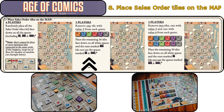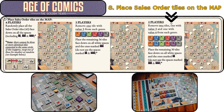Step 9 — 3 players: Remove one tile with value 3 from each genre. Place the remaining 36 tiles face down on all white spaces and the ones marked with a 3 meeple icon. Do not use the spaces marked with a 2 and 4 meeple icon. Two players: Remove two tiles — one with value 3 and one with value 4 — from each genre. Place the remaining 30 tiles face down on all white spaces and the ones marked with a 2 meeple icon. Do not use the spaces marked with a 3 and 4 meeple icon.